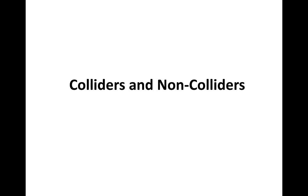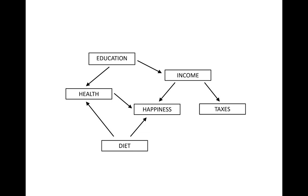This video covers colliders and non-colliders. A sequence of edges connecting two variables is a path between those variables. A path can be directed or undirected. When all the edges on the path point in the same direction, the path is directed. Otherwise, we say the path is undirected.